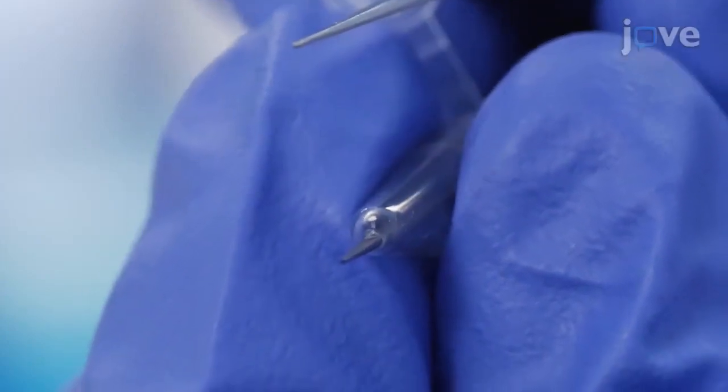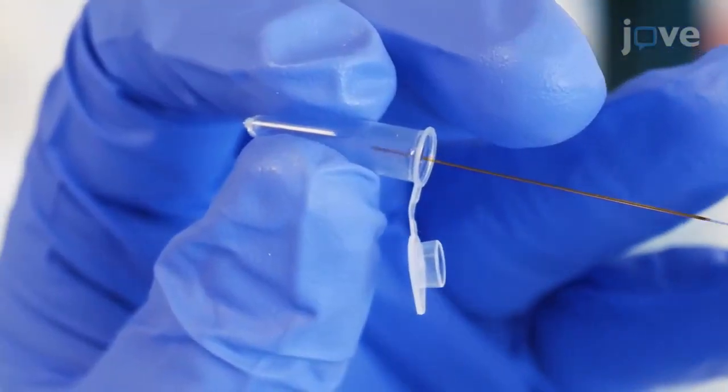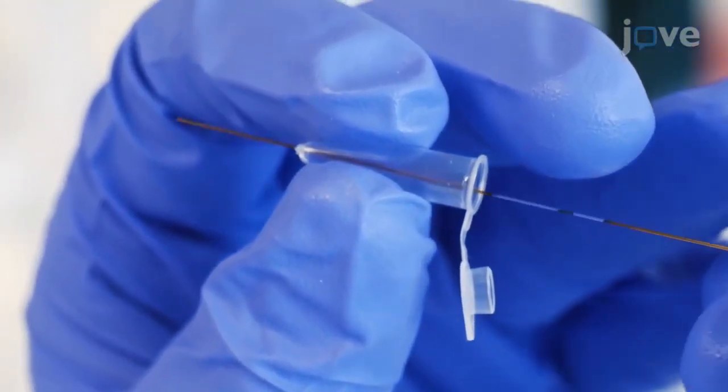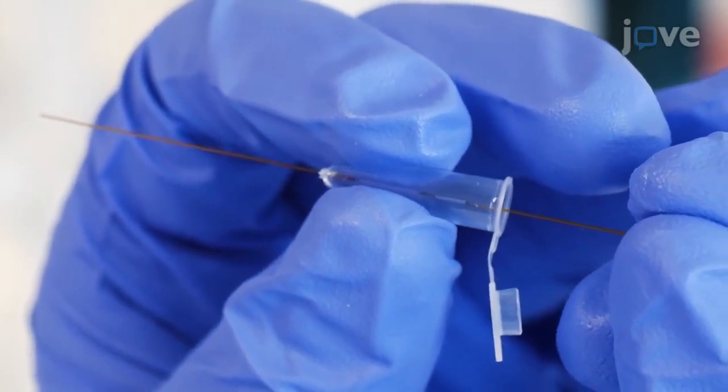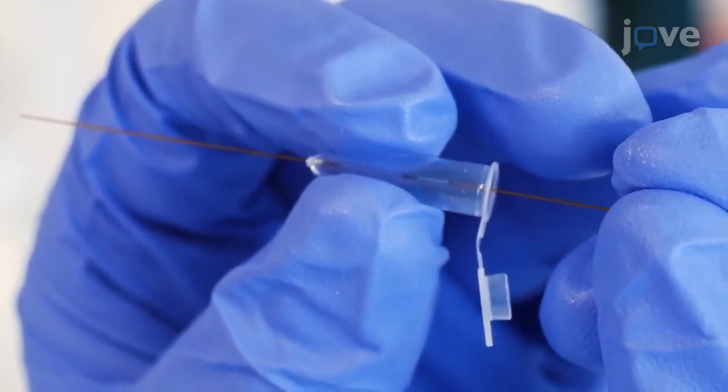Drill a small hole at the end of a 200 microliter tube around the same size as the capillary outer diameter to sufficiently hold the capillary in place once it is threaded through this hole. Thread the end of the capillary that is close to the burnt portion through the hole until the burnt portion is in the tube.